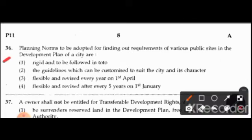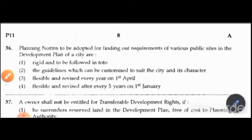Question 36: Planning norms to be adopted for finding out requirements of various public sites in the development plan of a city are: rigid and to be followed strictly; guidelines which can be customized to suit the city and its character; flexible and revised every year on 1st April; or flexible and revised after every five years on 1st January. The right answer is option 2: guidelines which can be customized to suit the city and its character.